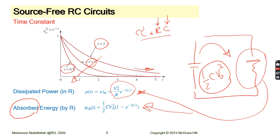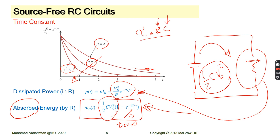If you focus on the energy equation and put T going to infinity, this exponential term will be zero, and you have (1/2)CV². This means all the stored energy in the capacitor will be dissipated in the resistor. Finally, no current, no energy remains.